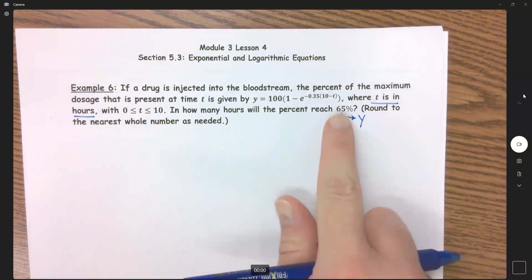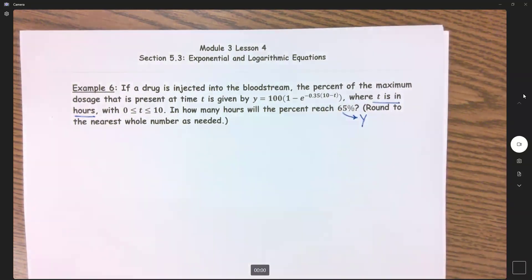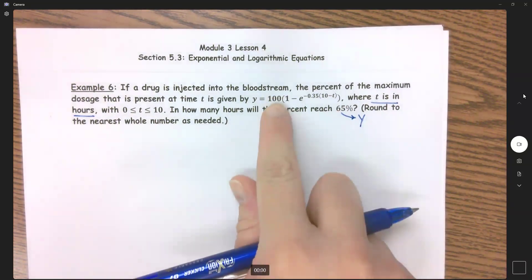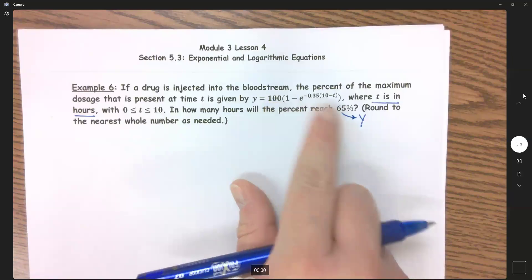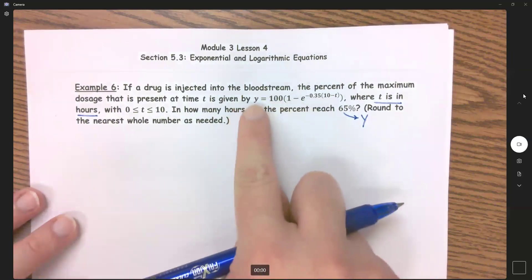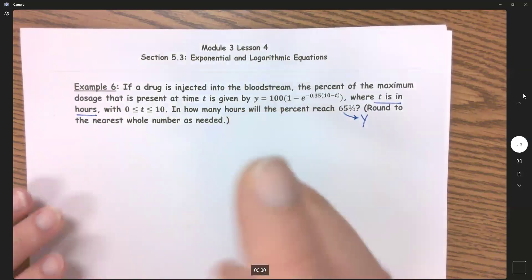This right here is my y, and I am going to use that as 65. A lot of times when we get percentages we move that decimal over, but because I have a 100 here that means this is a hundred percent, so we're going to keep that as 65. I'm going to rewrite this as 65 equals 100(1 - e^(-0.35(10-t))).